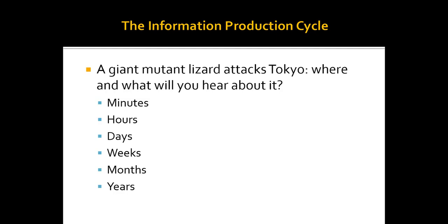Let's move on to the information production cycle. Depending on how new something is — a concept or an event — it's going to determine what type of information you can actually find about it. If we imagine a giant mutant lizard attacking downtown Tokyo, where and what will you hear about it? Well, within minutes you're going to hear news on the internet; you might even get an alert on your phone, hear something on Twitter, or hear something on the radio. It's going to be news at that point, and when it's news it's very new — we don't know much about it. We don't know why the lizard is doing this, where it came from, where it falls in the scientific taxonomy.